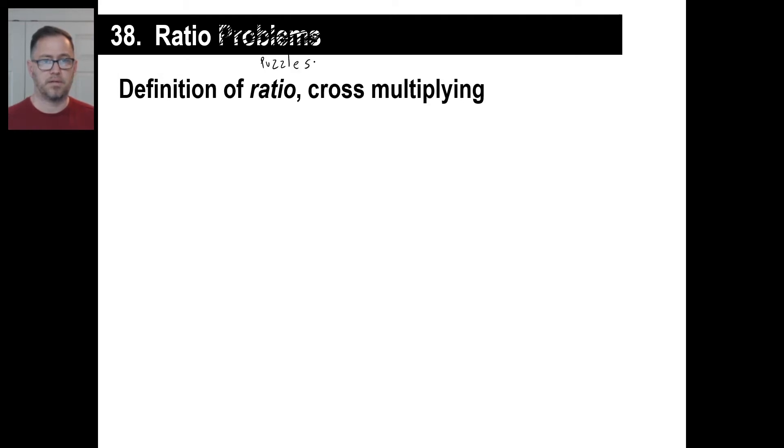Alrighty. We could write something that's really pleasant instead of word problems. Puzzles is pretty good. Bag of frosting is too long to say. We'll just use puzzles. Okay. Let's talk about two things: ratio, and we'll talk about what cross-multiplying means.